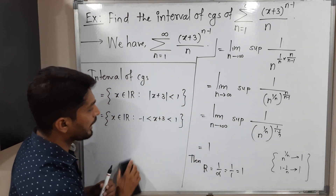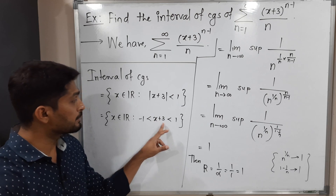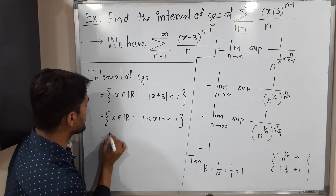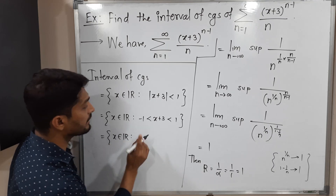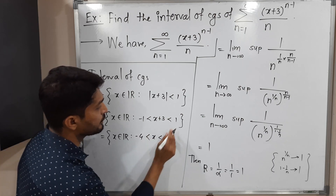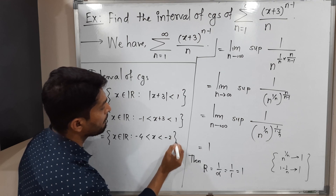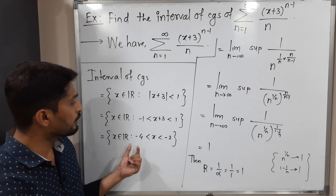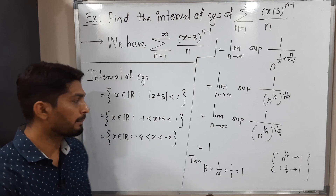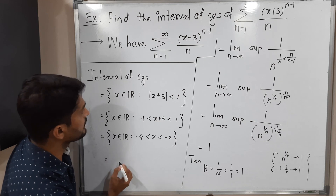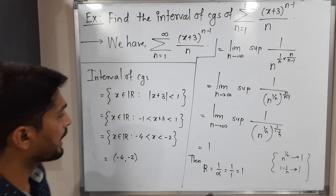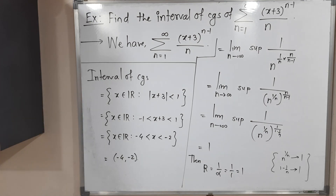Now I am going to subtract 3 from all sides. Minus 1 minus 3 gives minus 4, and 1 minus 3 gives minus 2. So the interval of convergence is the collection of all real numbers x lying between minus 4 and minus 2. Therefore the interval of convergence is (minus 4, minus 2). This is the required answer. Thank you, see you.